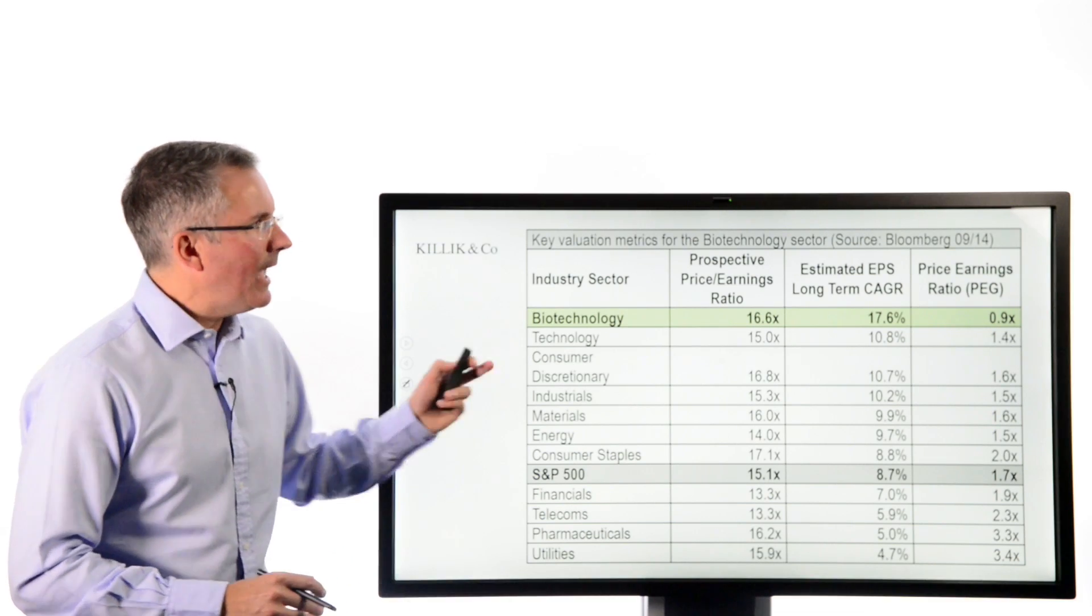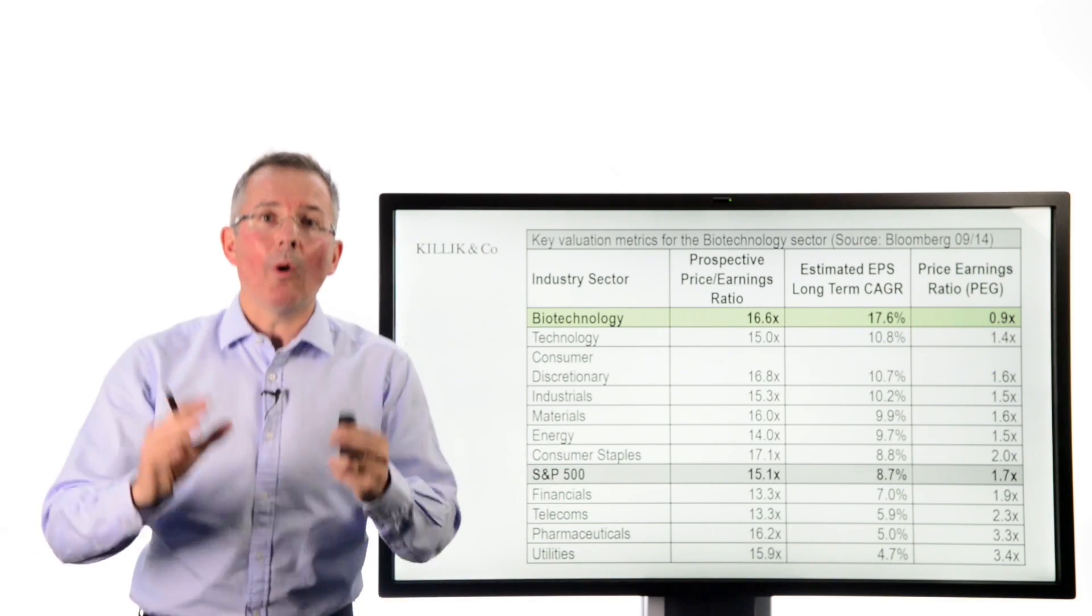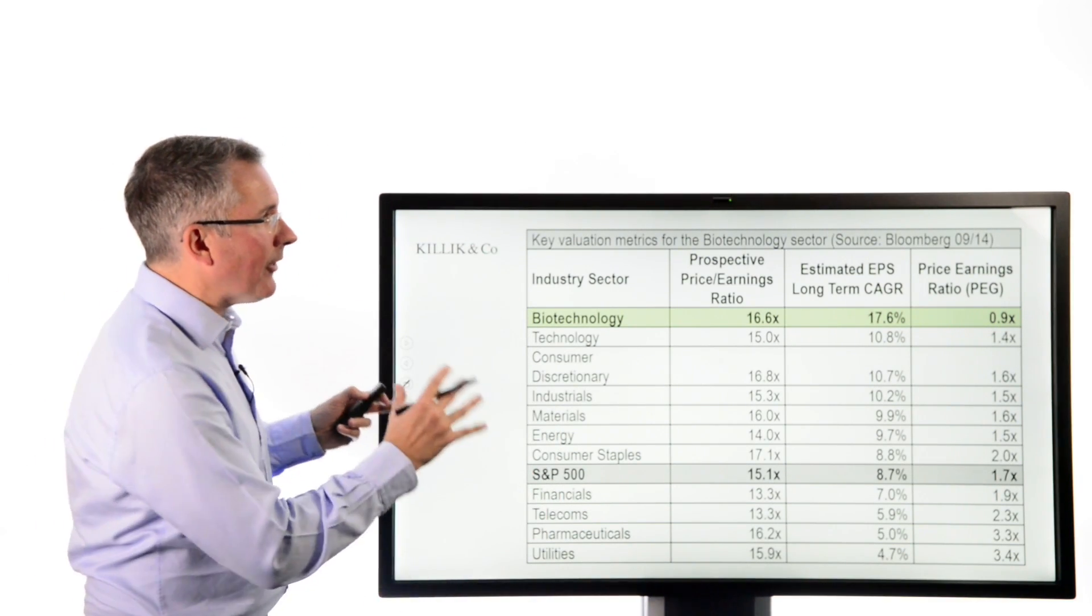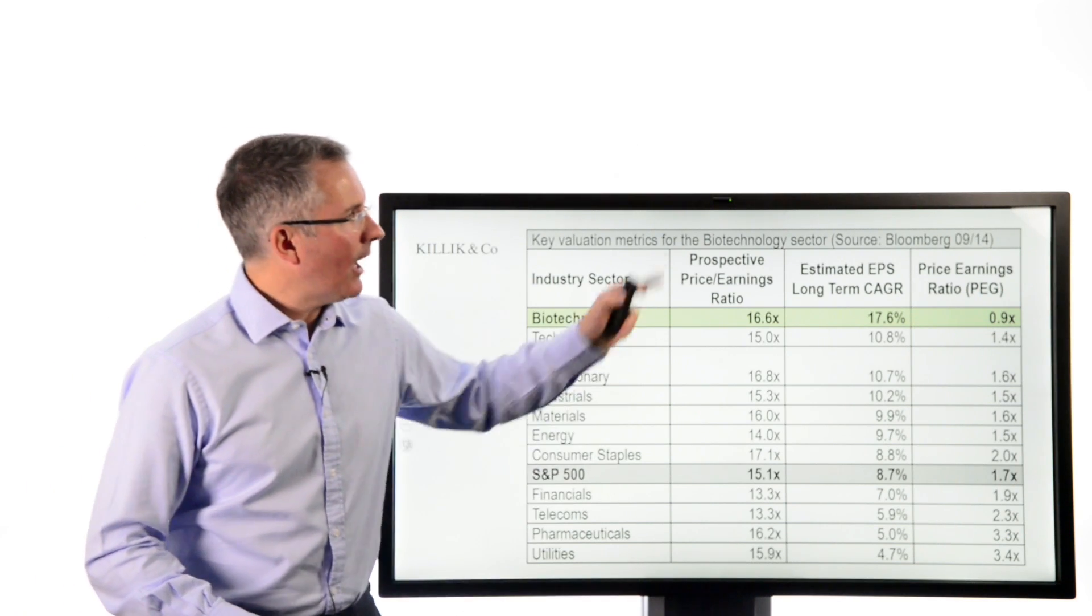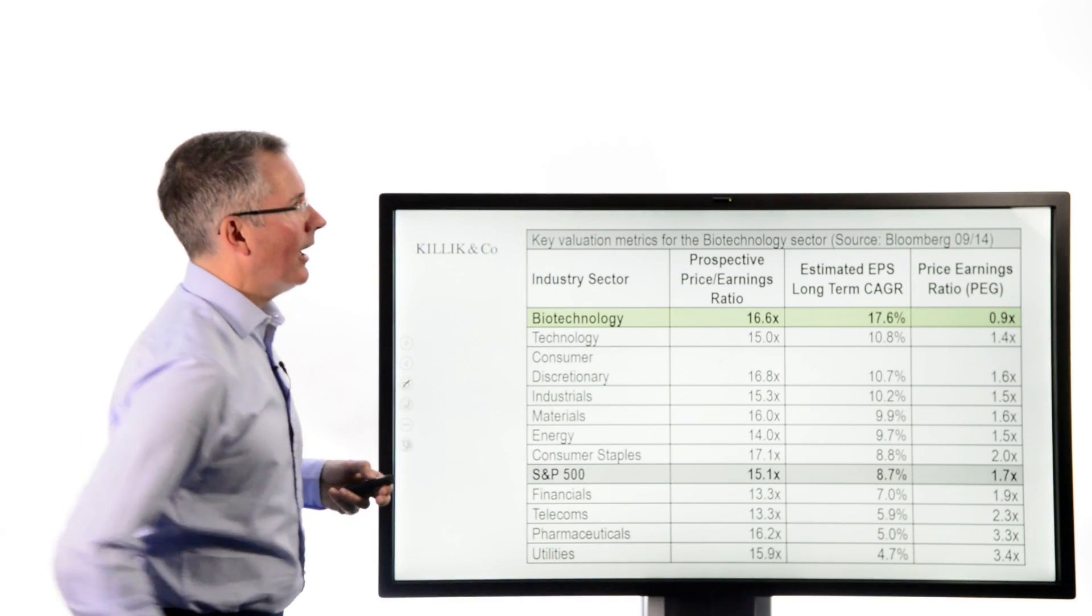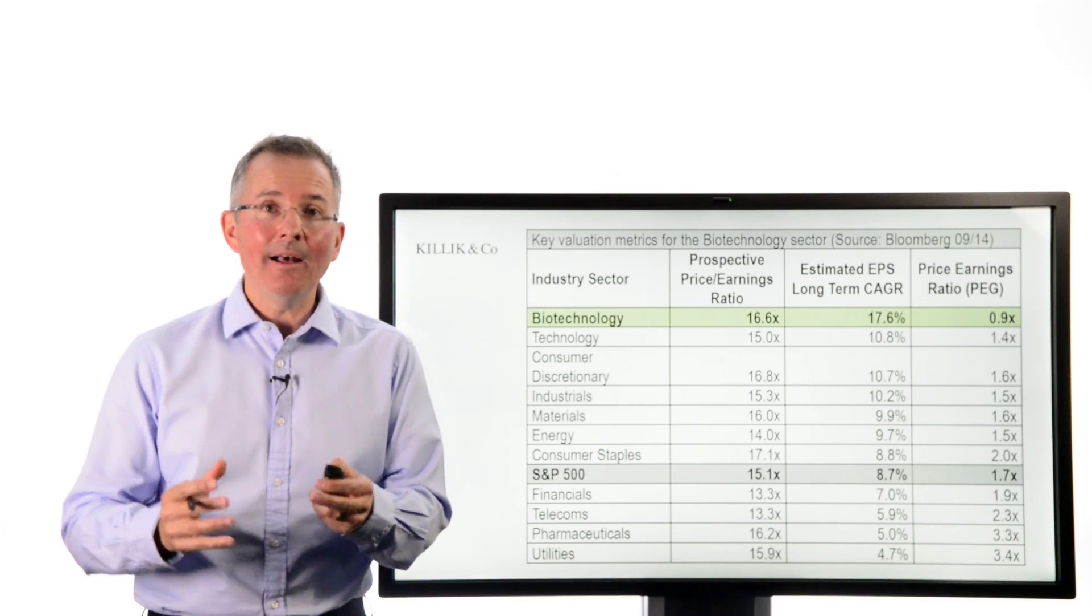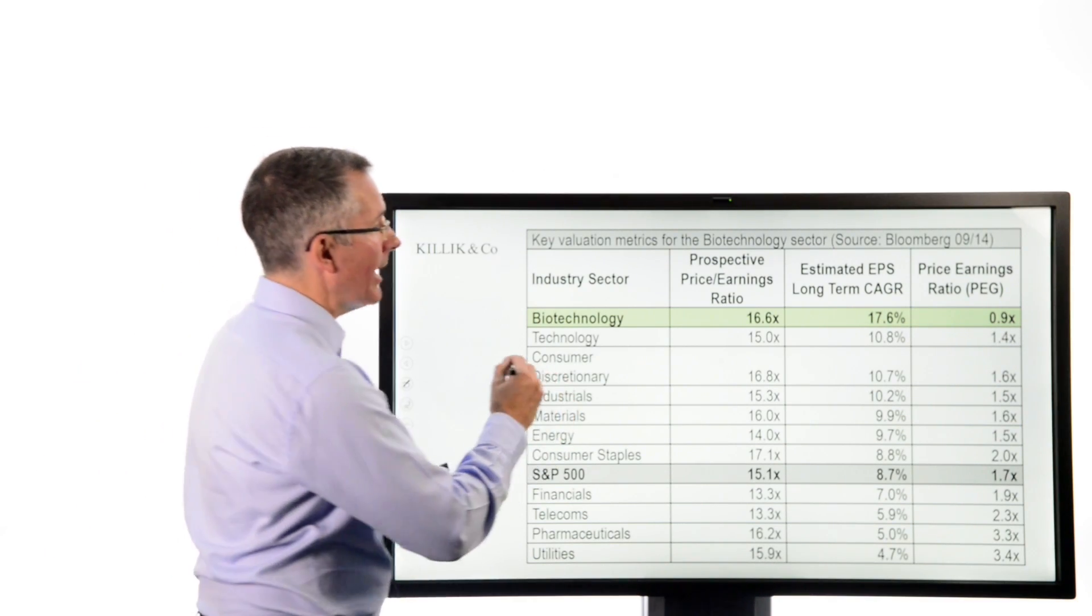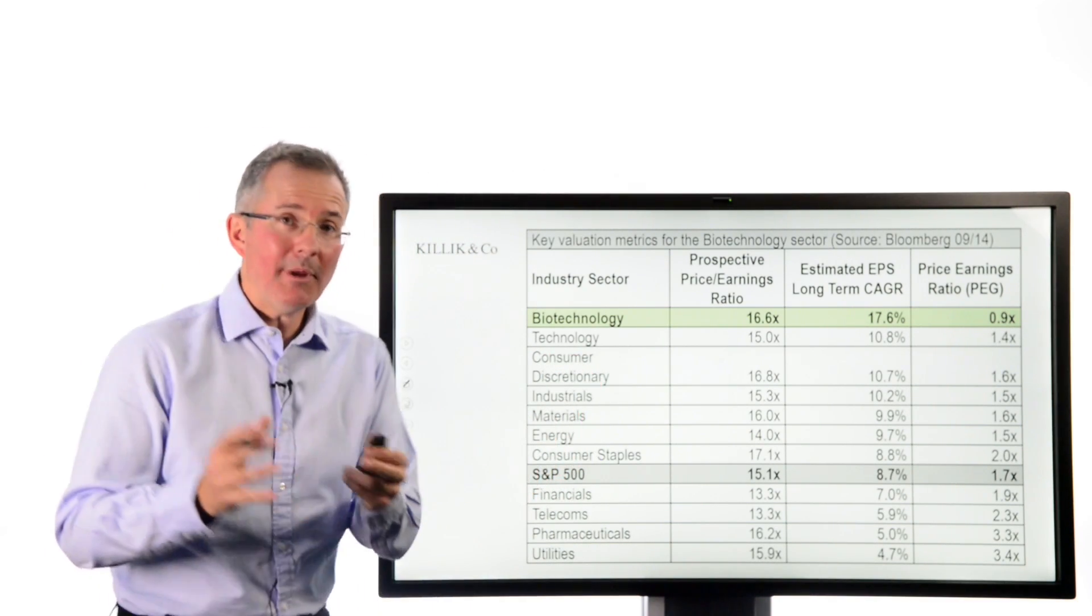So example. Now, this is a bit of a blitz of numbers. Don't worry too much about the detail. Were you to take a snapshot of a range of different sectors and compare their PE ratios to earnings growth rate?